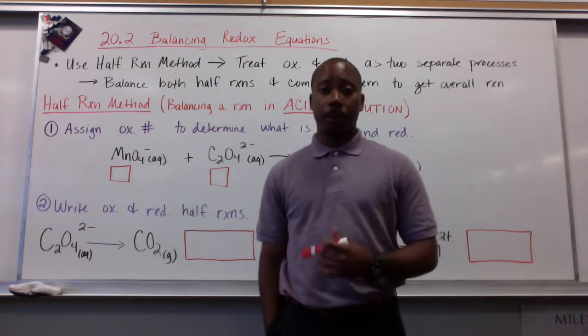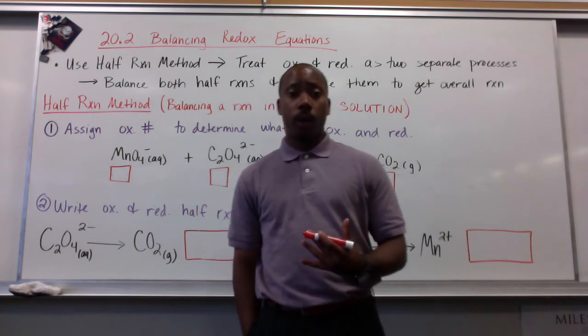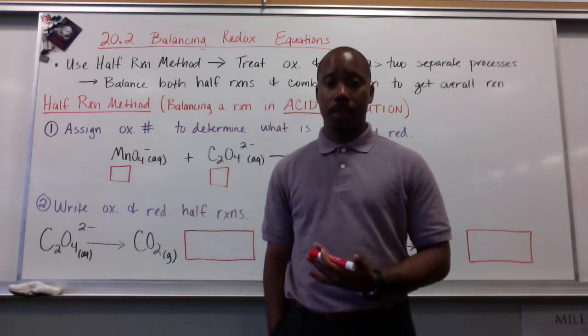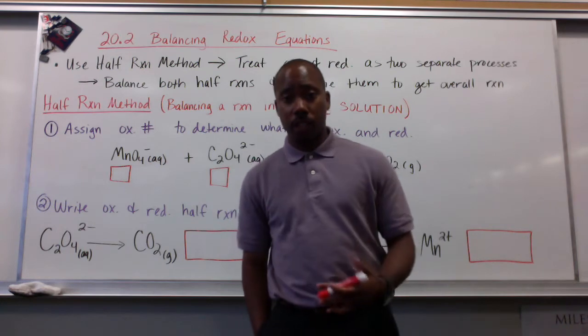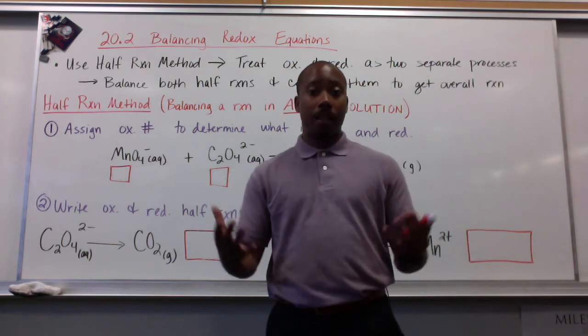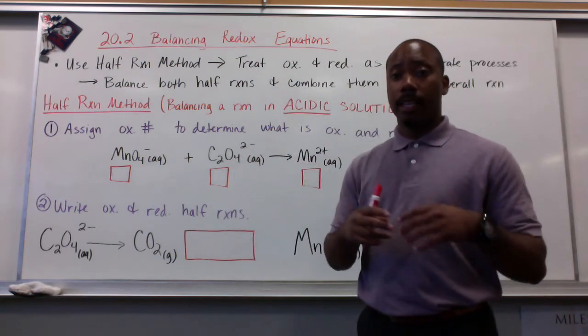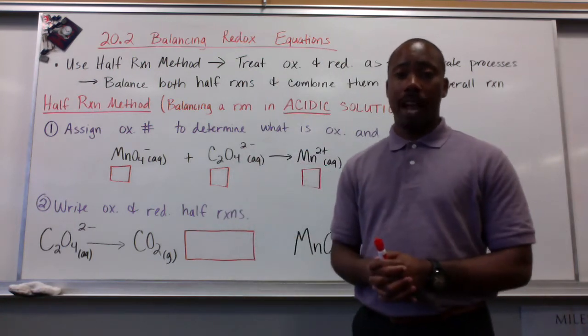Hello gentlemen. Welcome to Section 2, Chapter 20 on Balancing Redox Equations. To balance redox equations, we have to use the half-reaction method. This means we treat oxidation and reduction as two separate processes in order to balance them. So we balance both half-reactions separately and then combine them to get the overall reaction.